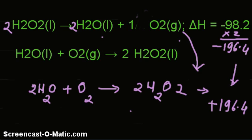Now we have checked about only H2O2. Check whether other molecules are also the same — are they balanced? In the final equation, we got 2H2O, and yes, here also 2H2O. Then oxygen: we got 1 here, and here also we got 1.